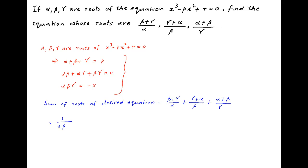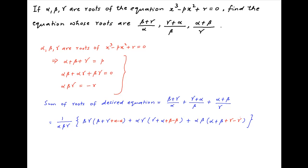Taking a common denominator of alpha·beta·gamma, the numerator is beta·gamma·(beta + gamma) + alpha·gamma·(gamma + alpha) + alpha·beta·(alpha + beta). Now we add and subtract alpha in the first bracket, add and subtract beta in the second bracket, and add and subtract gamma in the third bracket.